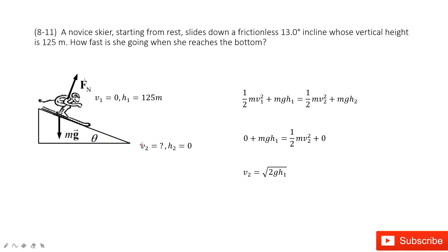As the final state, it still includes two parts, kinetic energy and potential energy. So one-half mv2 squared plus mgh2.